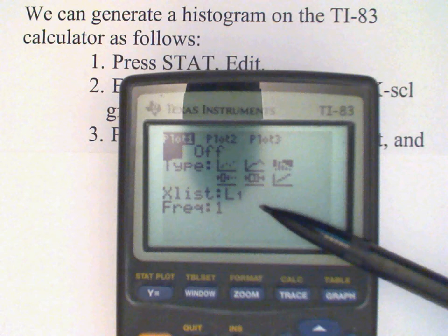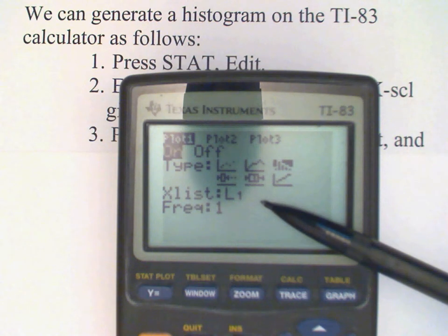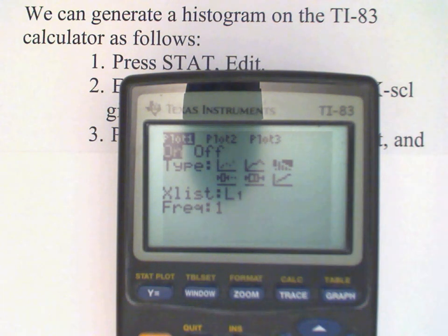You should check that your X list is L1. Your calculator is going to look in L1 for the data set and the frequency is 1. We will look later at how to use frequency distributions. But for now, that frequency should just be set to 1.